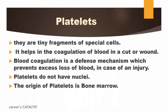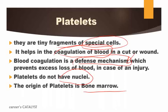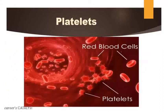Now we will talk about platelets. They are tiny fragments of special cells. They help in the coagulation of blood — this is very important. Platelets also do not have nuclei. The origin of platelets is in the bone marrow. Blood coagulation is a defense mechanism which prevents excess loss of blood in case of injury. When you have an injury, excess loss of blood can be prevented by using this defense mechanism. Let me show you the diagram in which we will discuss this defense mechanism.